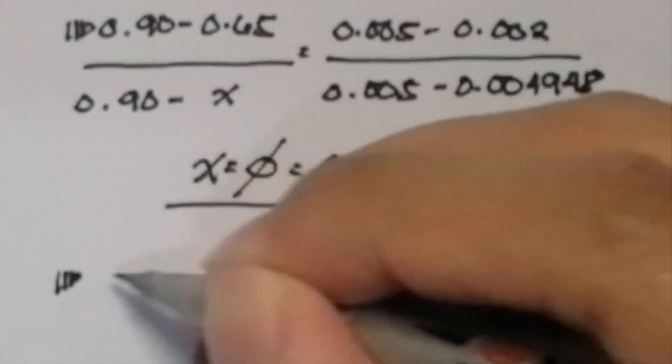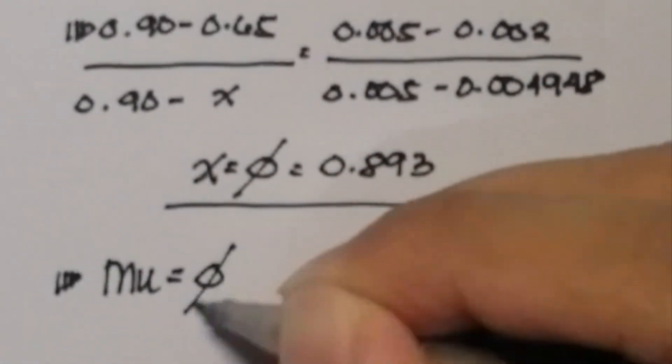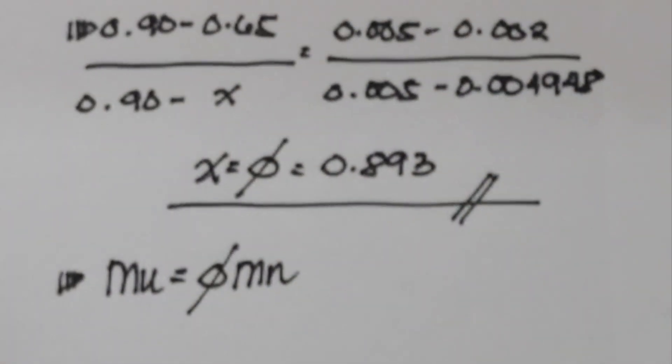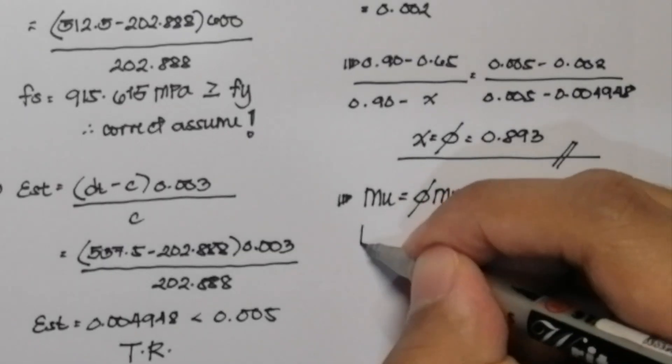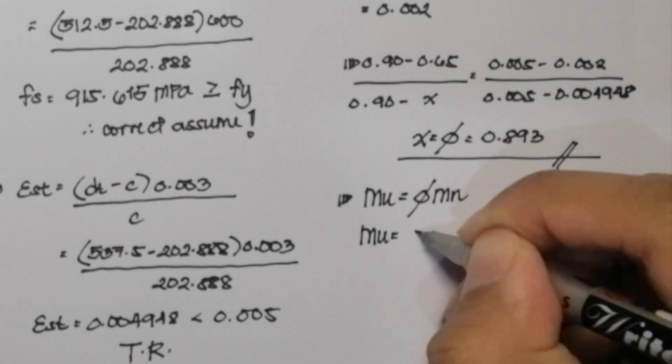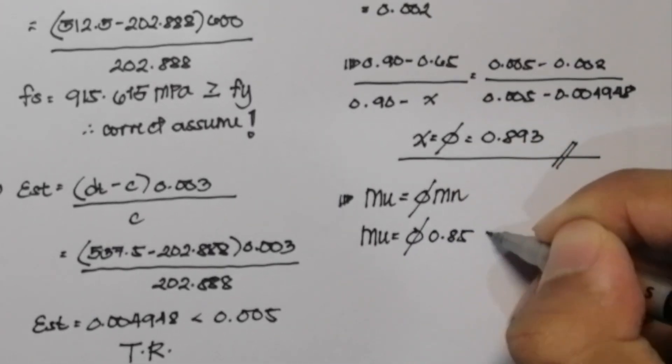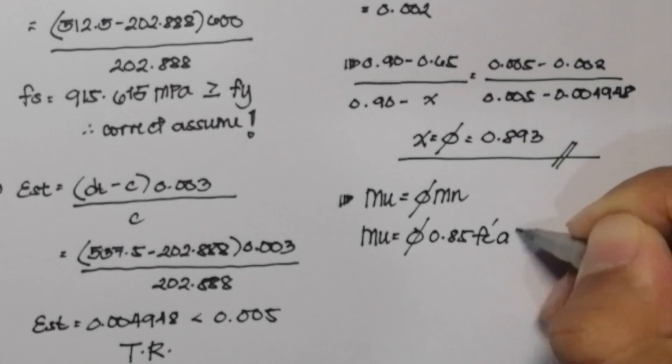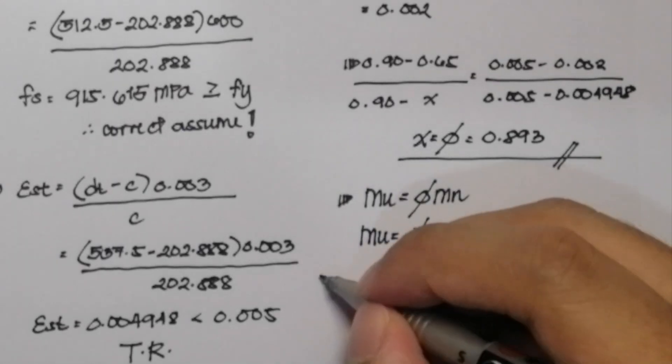To solve for the ultimate moment or the design flexure strength, we can use the formula Mu is equal to phi multiplied by Mn. To solve for the value of Mn, we can use our compressive force or our tensile force. In this problem, I will use the compressive force. So it will be Mu is equal to phi multiplied by 0.85 FC' AB multiplied by D minus A over 2.